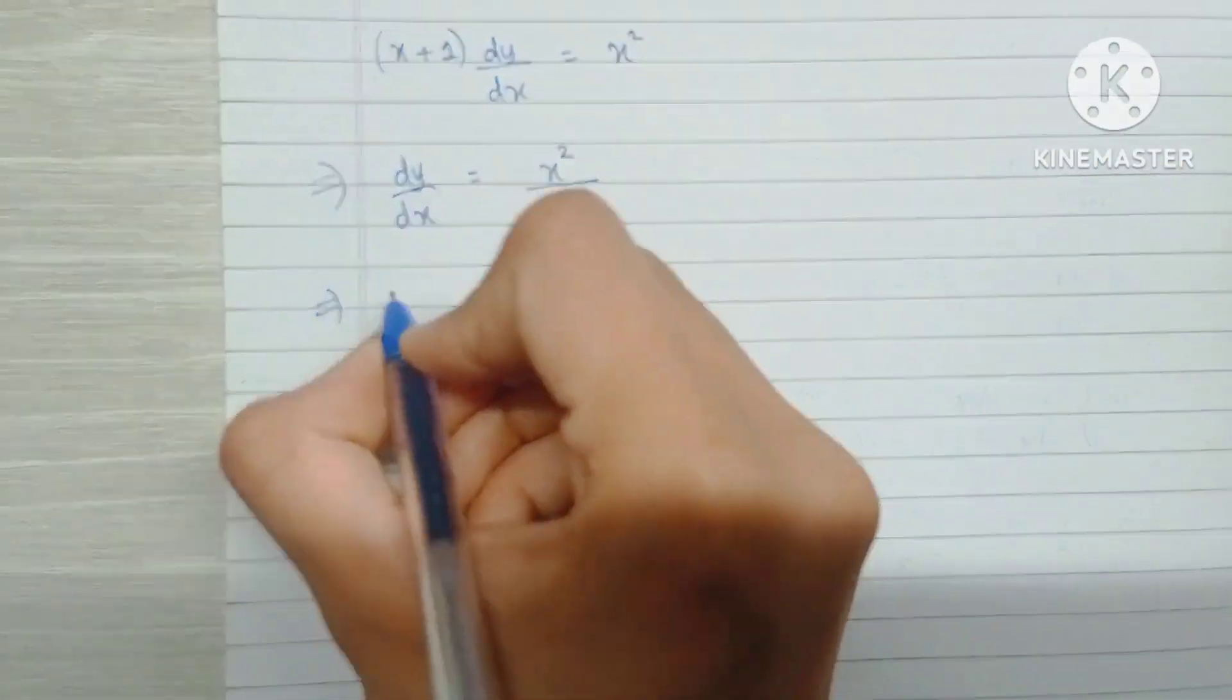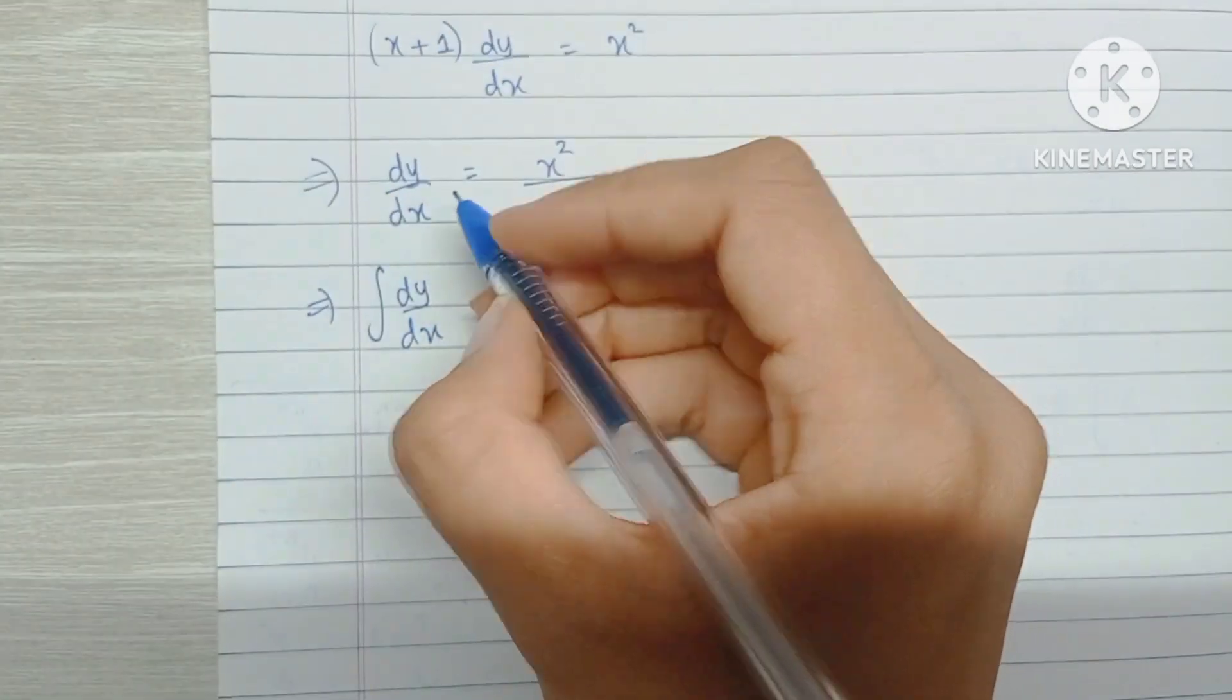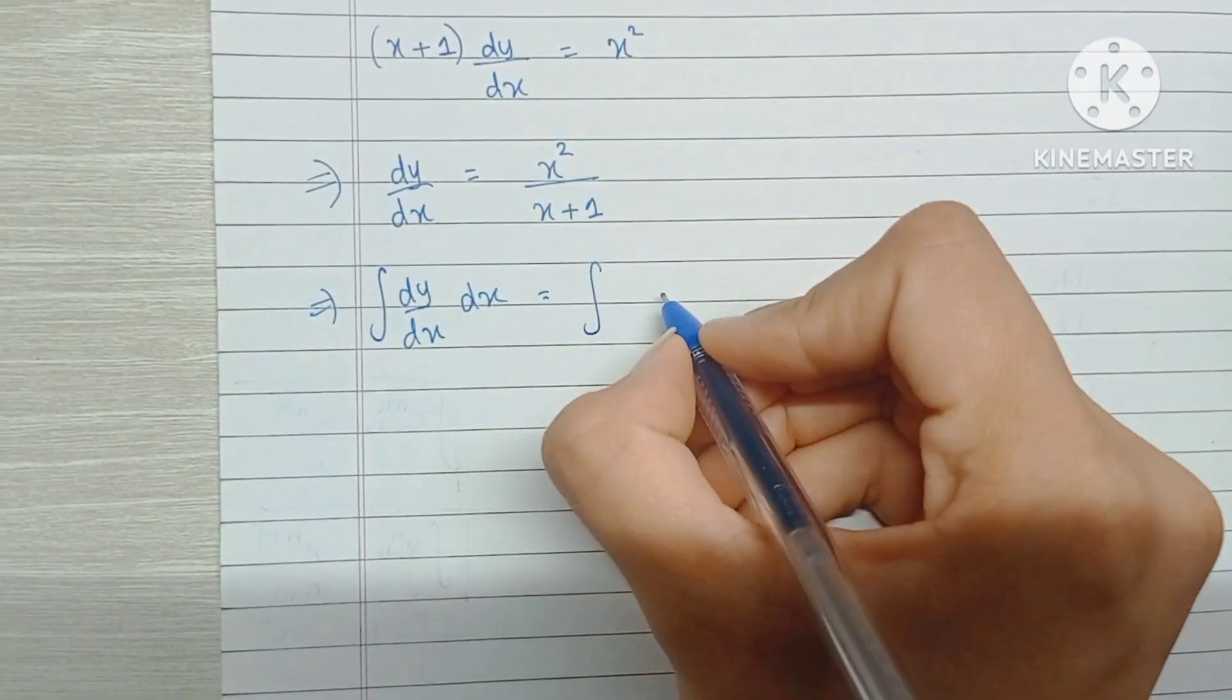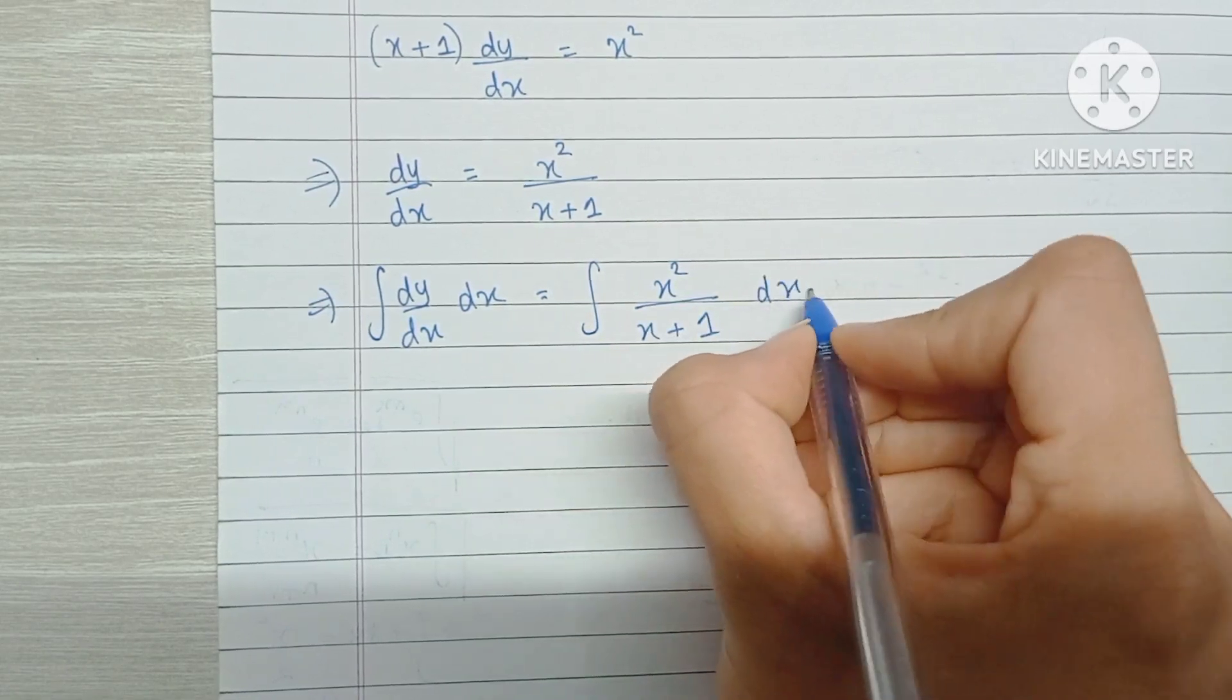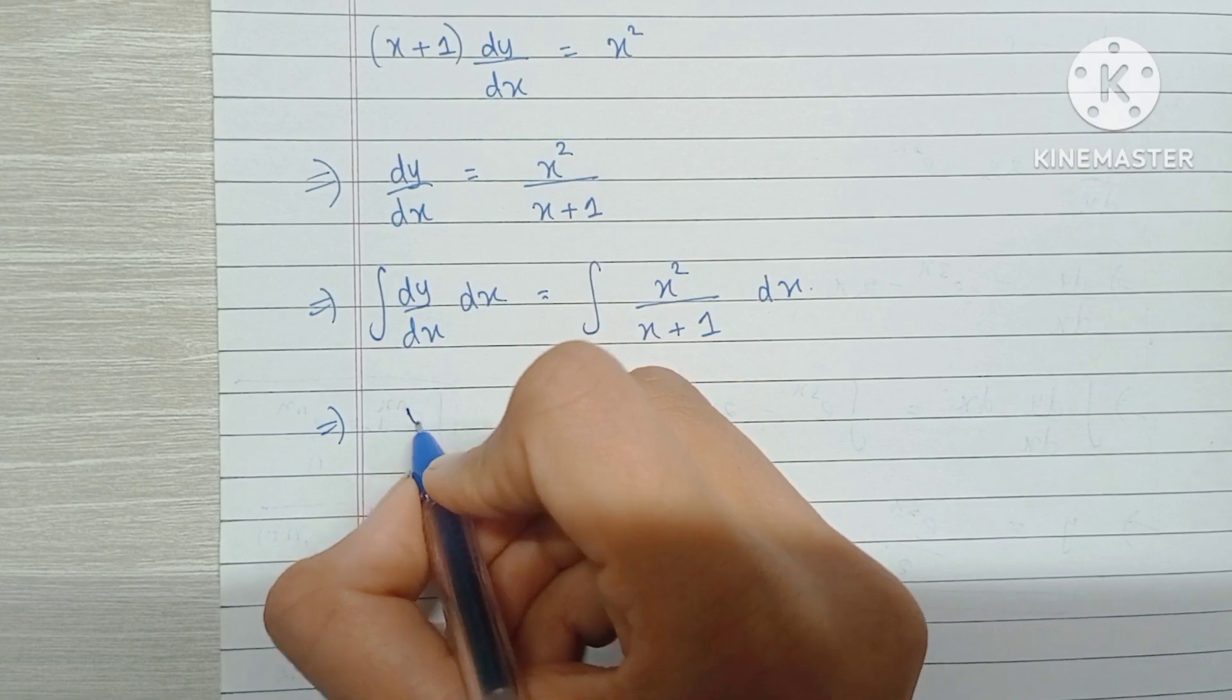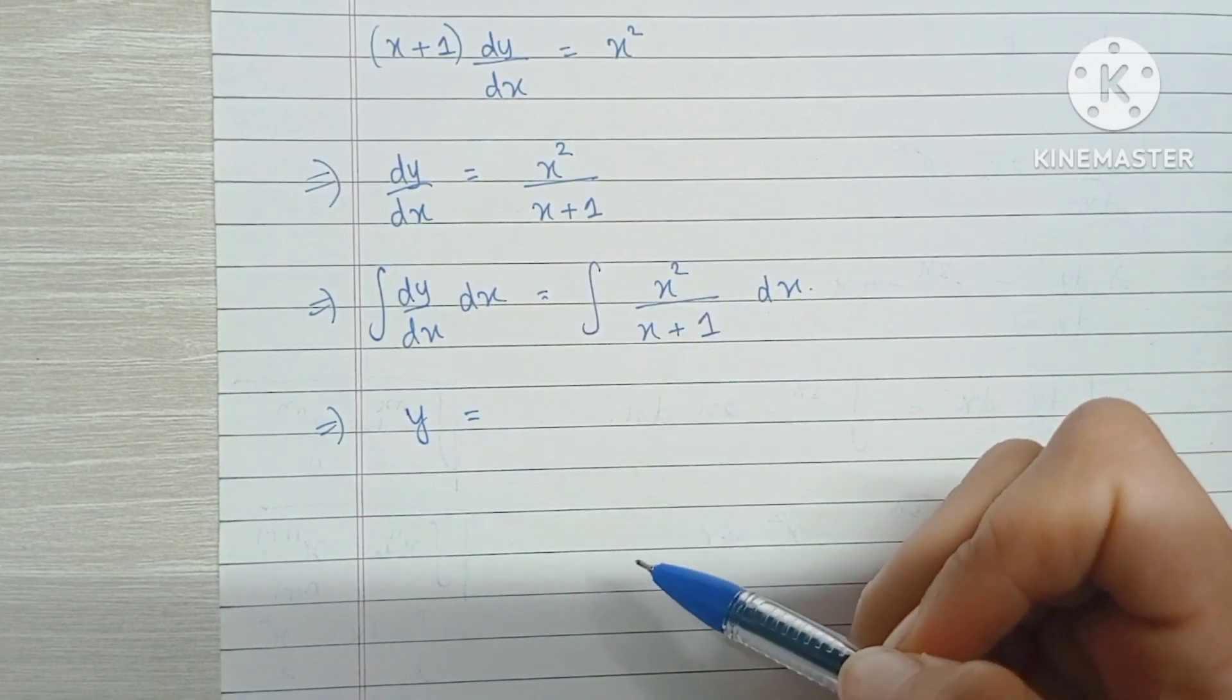Now if I integrate both sides with respect to x, I'll get back y on the left side, which means that all that's left to do is integrate the right side with respect to x. So we have y is equal to the integral of x squared upon x plus 1.